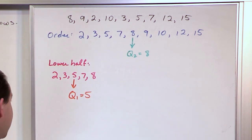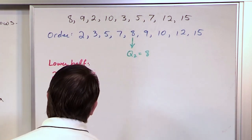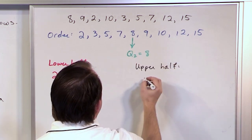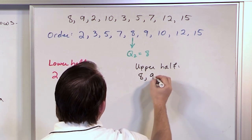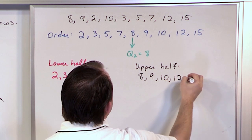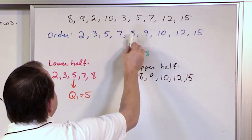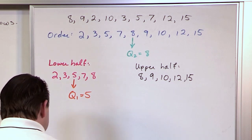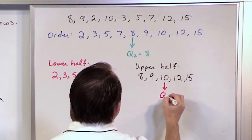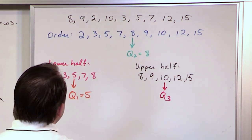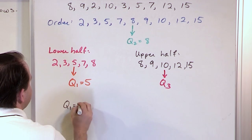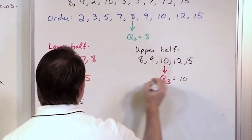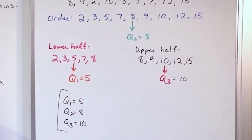Then we go over here and do exactly the same thing for the upper half. You cannot just throw away data — you have to include the middle value in the upper half as well. Now we have 6 values to choose from and the number 10 is in the middle. So that's Q3. So if you were to write down the quartiles of this data set, Q1 is equal to 5, Q2 is equal to 8, and Q3 is equal to 10.